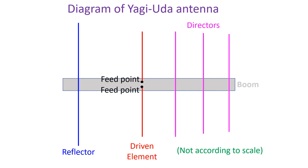Spacing between the elements may vary from a quarter wavelength to one tenth of a wavelength depending on the design. The radiation pattern of the Yagi-Uda antenna is along the axis perpendicular to the plane of the elements, towards the direction of the directors.